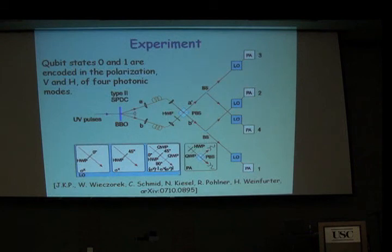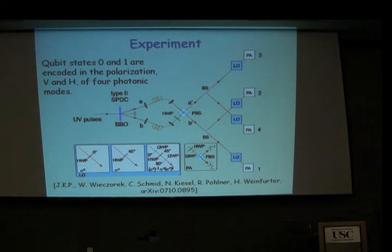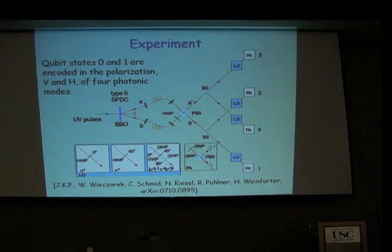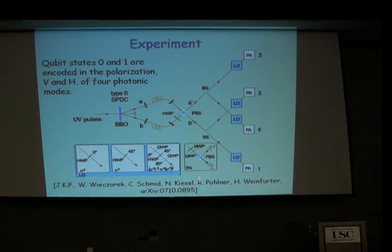The amazing thing for the Toric code is that I just need to do these local operations at the end before measuring. I don't need to make the qubits interact at all, because all the information — all the properties — you encode in the ground state right here, and that state already contains all the non-trivial statistics. The measurement at the end is done by a partial beam splitter that splits the photon into either horizontal or vertical polarization, and measuring one of the two tells you the outcome.